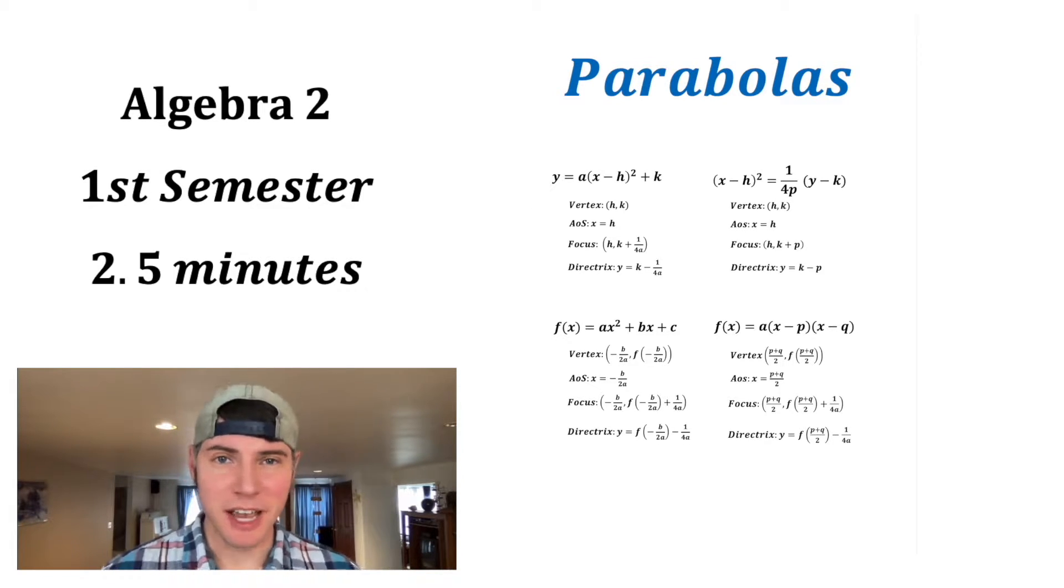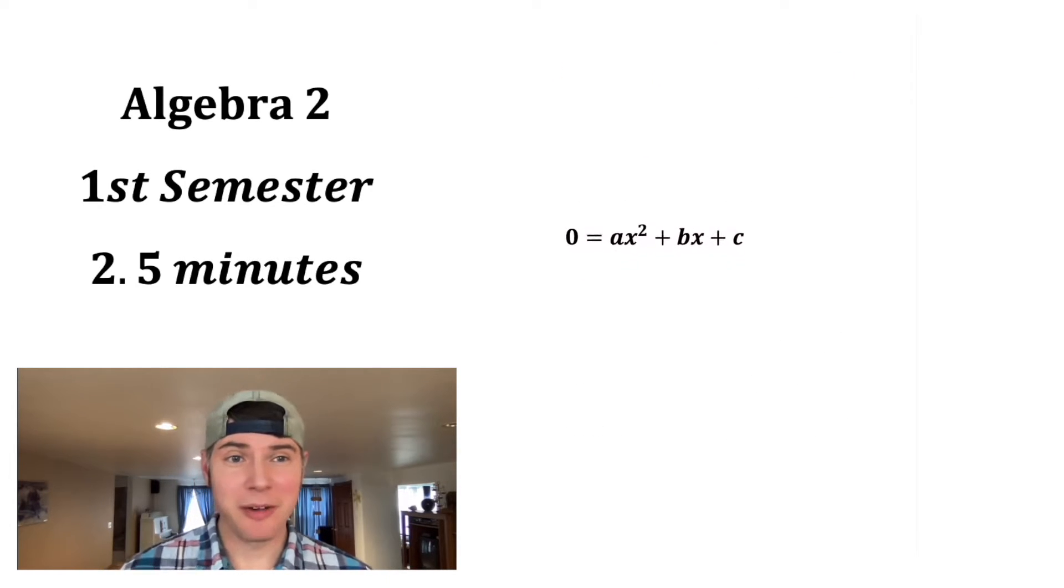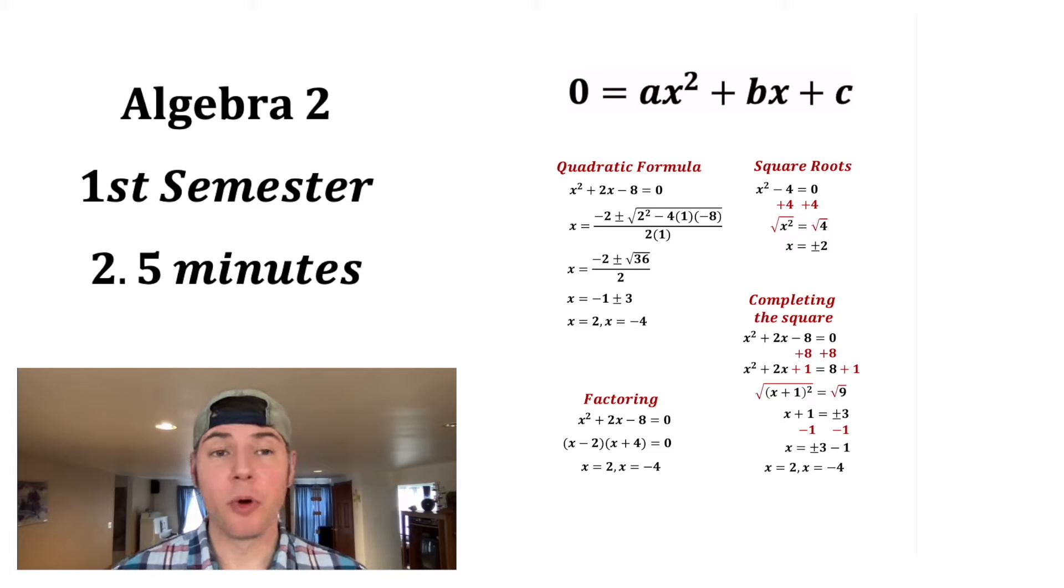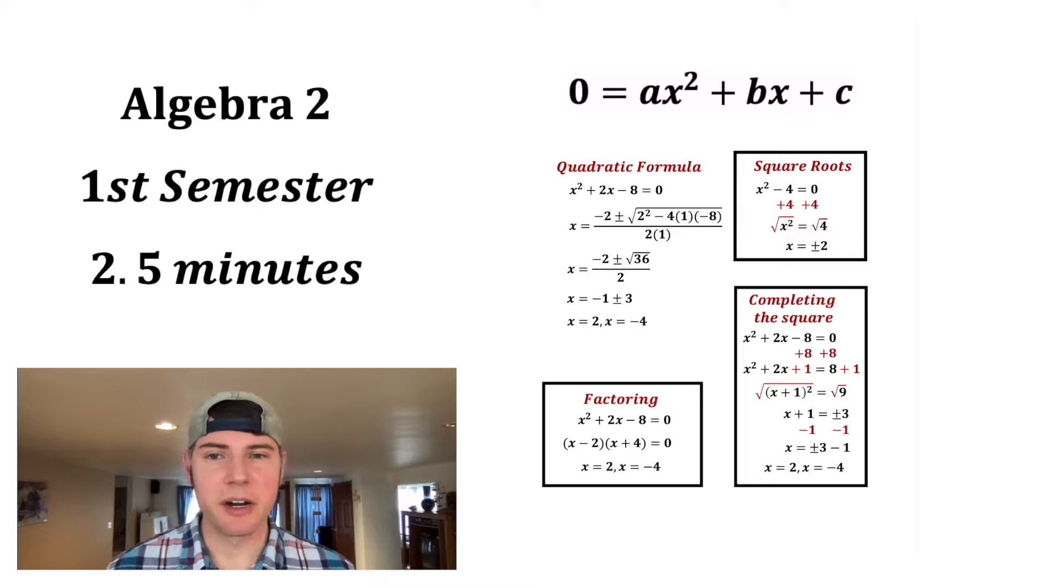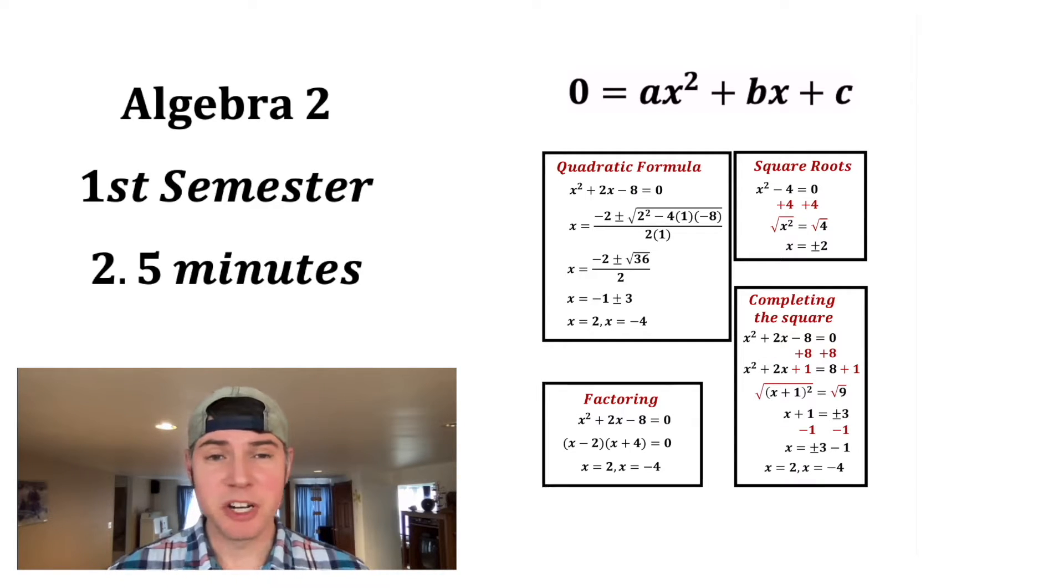Now we can also find the y-intercept by setting x equal to zero, or the x-intercepts by setting y equal to zero. Let's talk more about finding the x-intercepts. There are typically four ways to solve a quadratic equation when it's set equal to zero: a square roots method, factoring, completing the square, or quadratic formula. In some situations one method is best. A lot of times you have your choice.